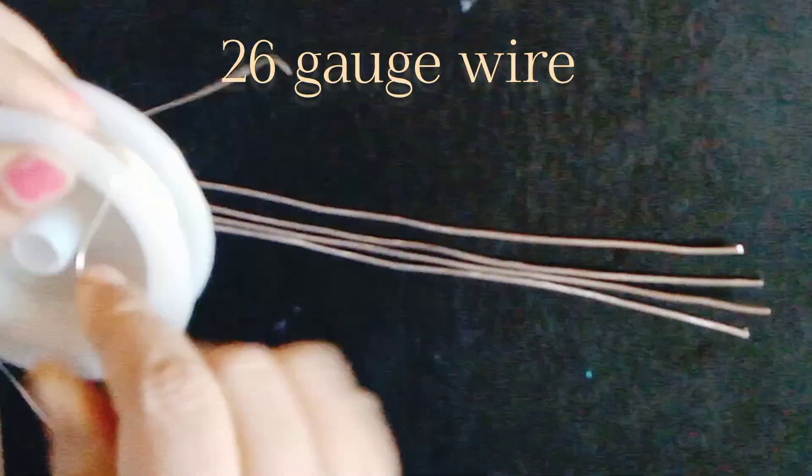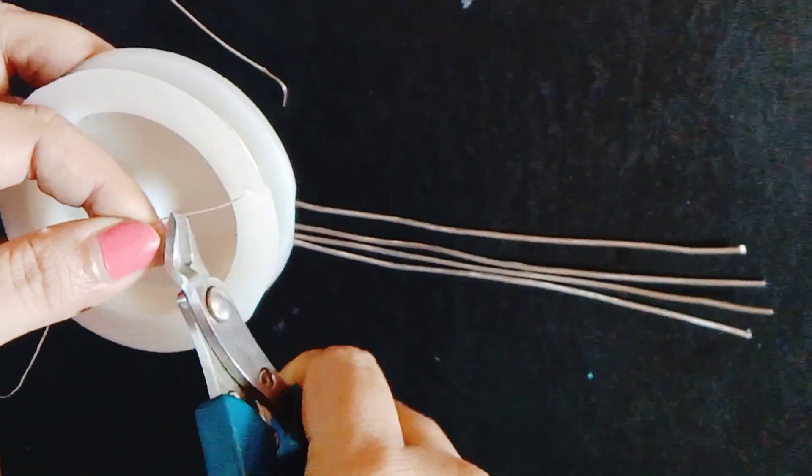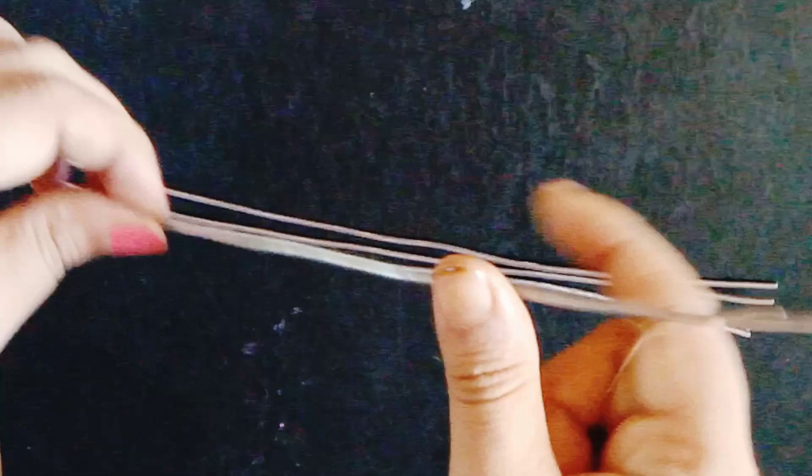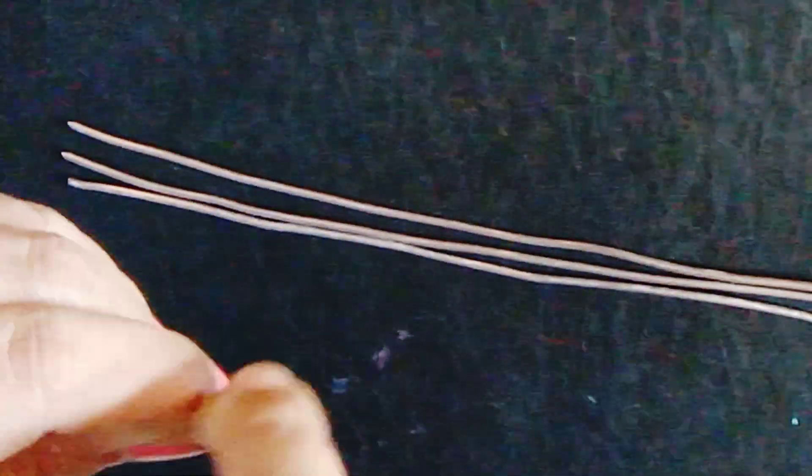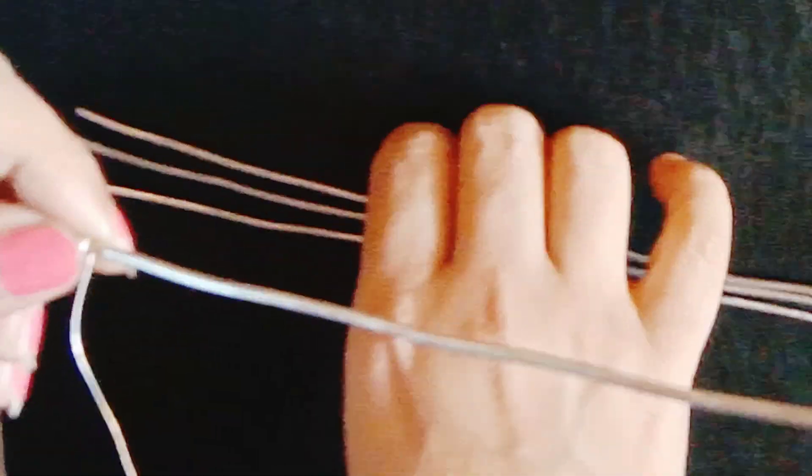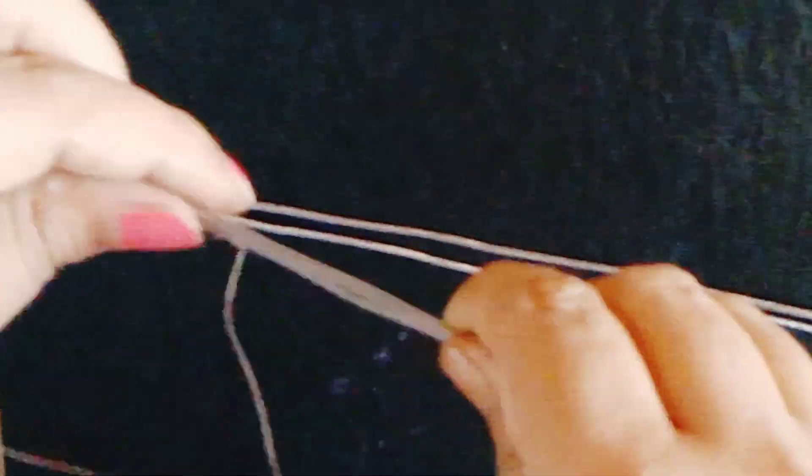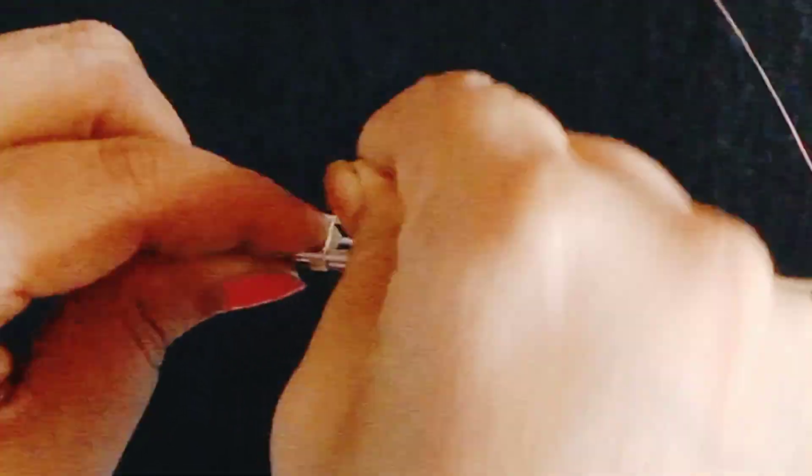This is 26 gauge wire for wrapping. This is a temple-like weaving today I'm going to show you. I'm wrapping the first wire four times and then wrap the second wire with the first wire all together two times.